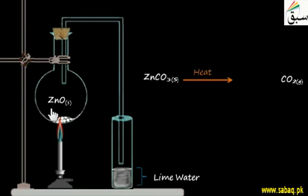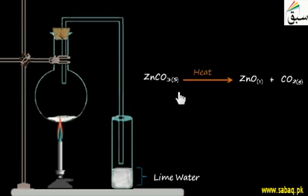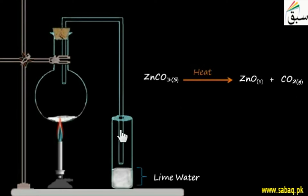Here we have zinc oxide. We have an equation: zinc carbonate decomposes upon heating, giving us zinc oxide and carbon dioxide. Zinc carbonate is decomposed and two compounds are produced — one is zinc oxide and one is carbon dioxide gas. The release of carbon dioxide gas is evidenced here.